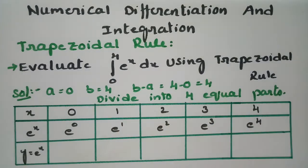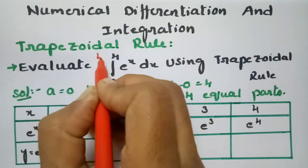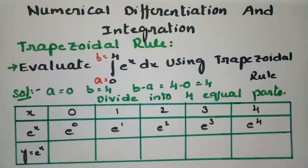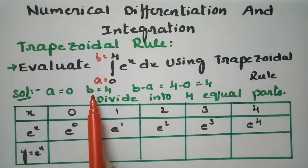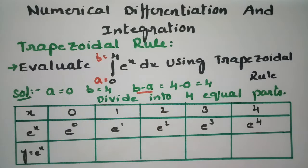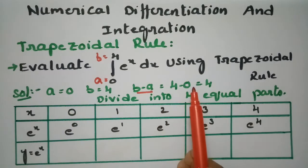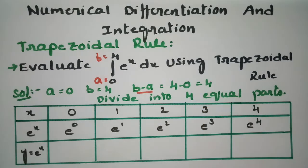Here our a value is equal to 0 and our b value is equal to 4. So b minus a is 4 minus 0, which is equal to 4. Now I am going to divide this into 4 equal parts, so h = (b - a)/4 = 1.